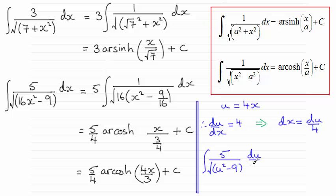And if I make that substitution into here that integral changes to the integral of 5 all divided by the root of u squared minus 9 and that's integrated with respect to u. But we're going to have that over 4.